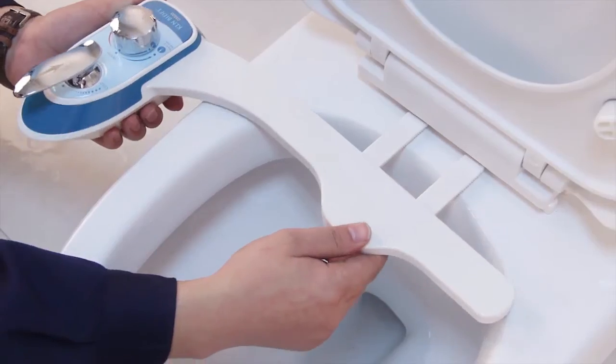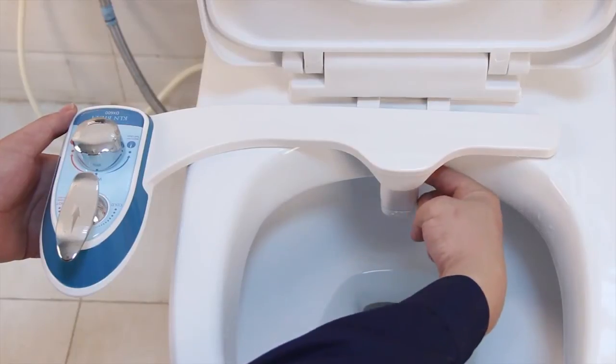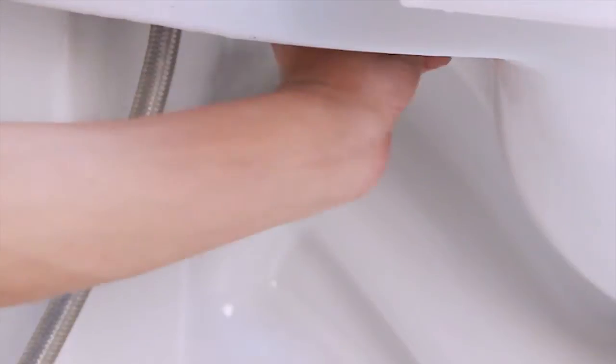Align the bidet body with the grooves of the mounting plate, then push it into the open grooves. Make sure the bidet nozzle is positioned in the center of the toilet. Tighten the toilet screws until snug.